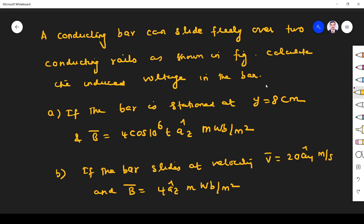Calculate the induced voltage in the bar. First, if the bar is stationed at y equals 8 centimeters and B equals 4 cos 10^6 t az milliweber per meter square. Part b, if the bar slides at velocity v equals 20 ay meters per second and magnetic field is 4 az milliweber per meter square.